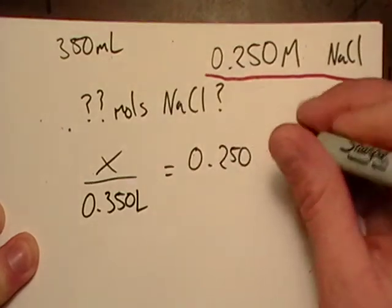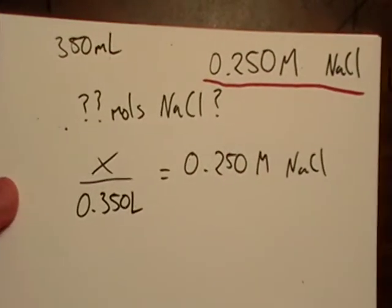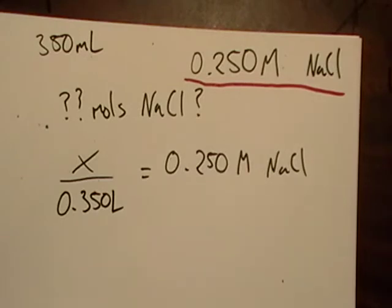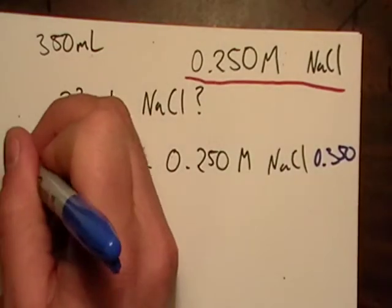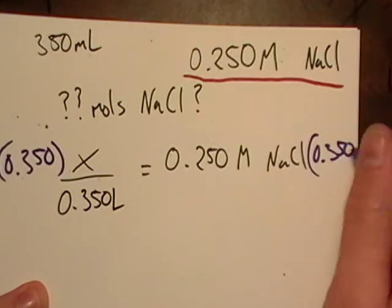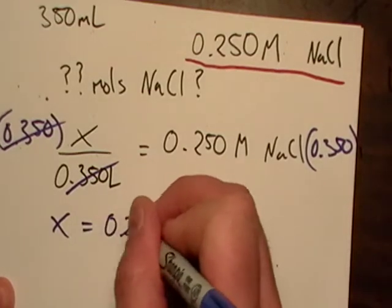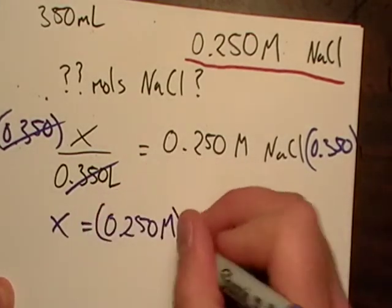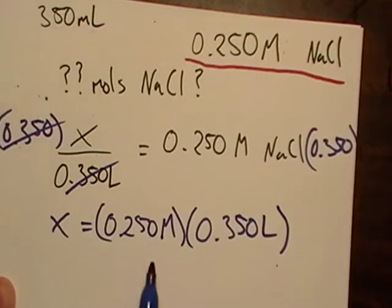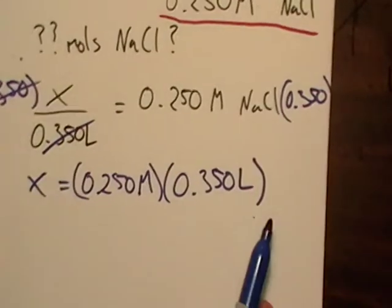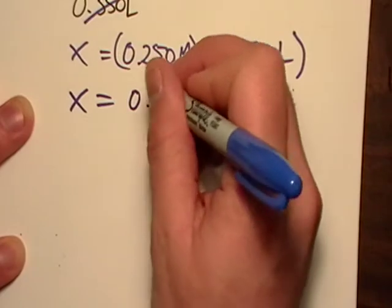So what am I going to do? This is just a regular algebra problem, isn't it? Okay, I'm just going to multiply both sides of this thing by 0.350. Okay, so now these cancel out. Now I've got X being equal to 0.250. Notice how I'm still writing my units, okay? I didn't write it here because I ran out of room, but see how I still did my units.